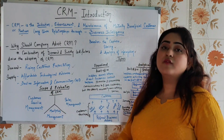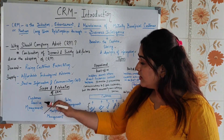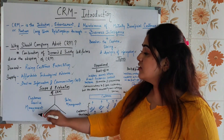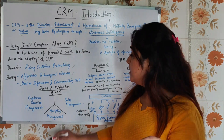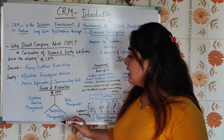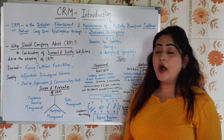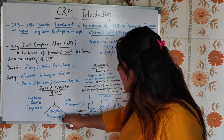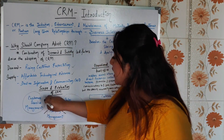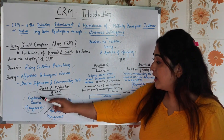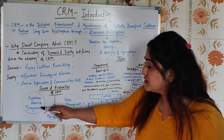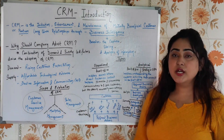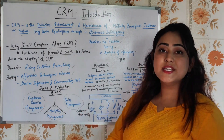Next is the scope and evolution of CRM. The scope of CRM covers three different segments: first, customer service management; second, marketing management; and third, sales management. All three together form the total scope of CRM.